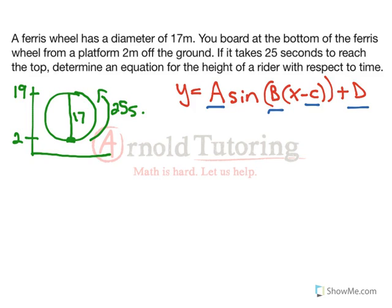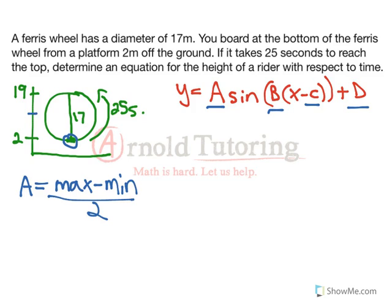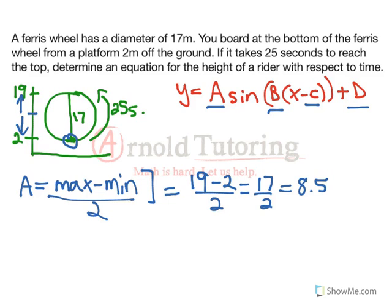Now we need an equation to represent the height of someone on the wheel as time goes forward — after x seconds, how high is the rider? Let's go through our equations for the different variables. 'a' is our vertical stretch, also our amplitude. The easiest way to find a is: max minus min, over 2. Amplitude is just the distance from the middle to the top, or middle to the bottom. The max is 19, minus the minimum of 2, over 2 — that's 17 over 2, which is 8.5. So we've already got our 'a' value.